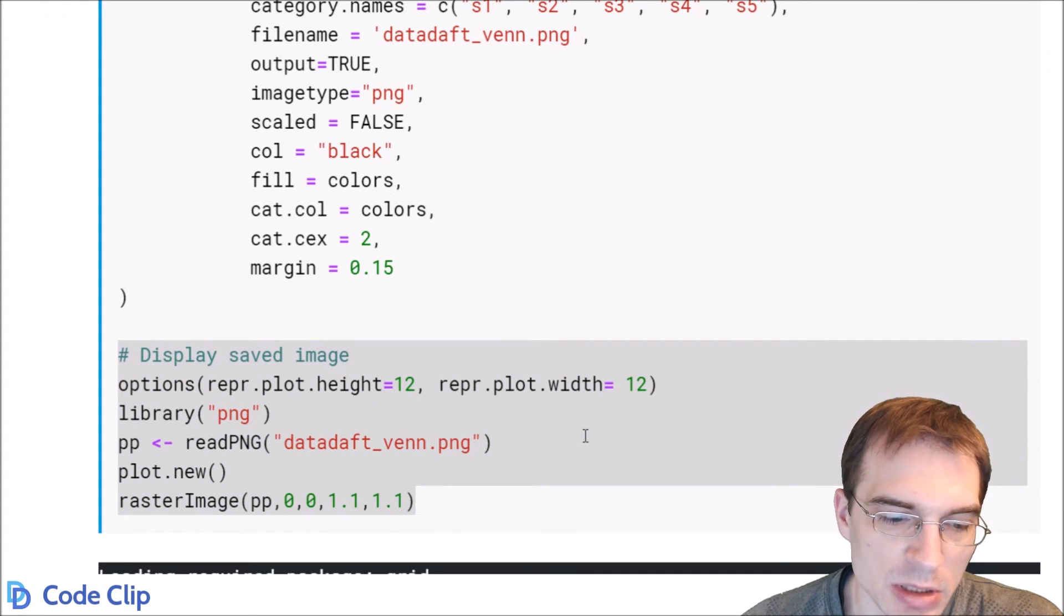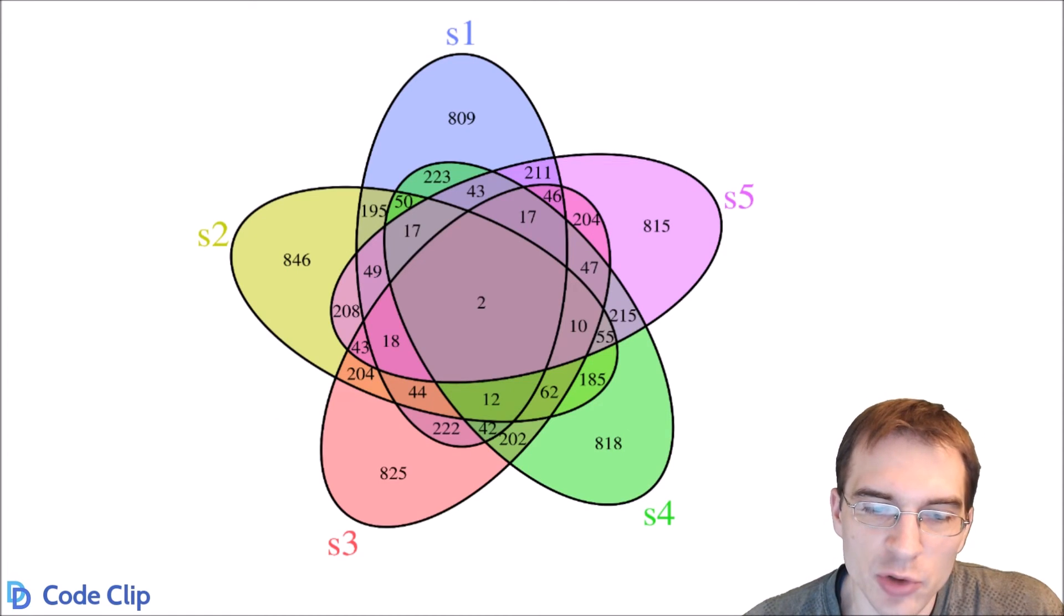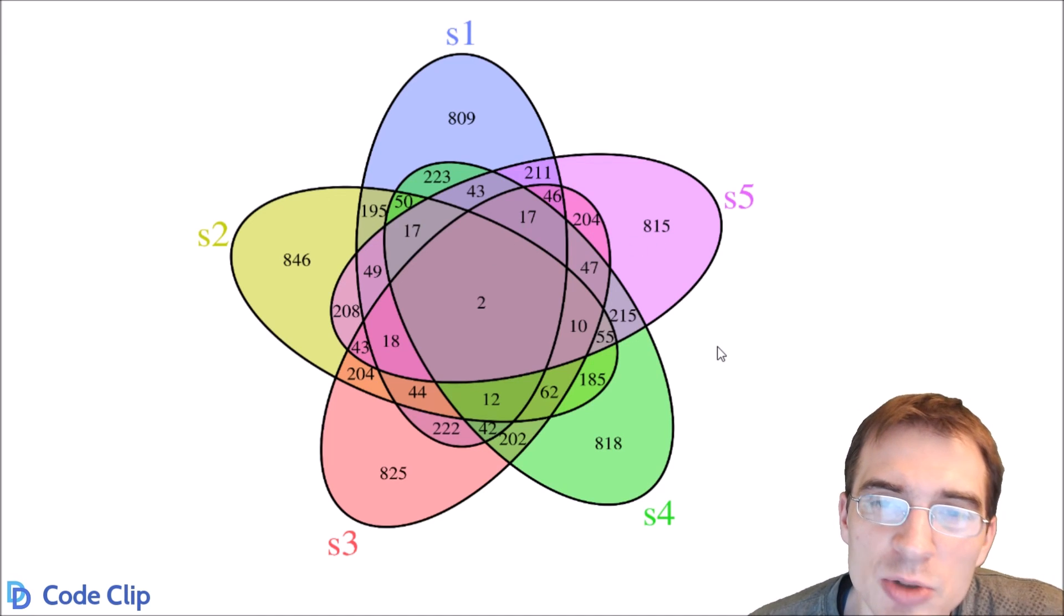So let's run this. It might take a little bit to load in all the packages, but as you can see, we've created this five-group Venn diagram with a lot of different overlapping segments, and you're probably not going to want to use a Venn diagram with five different groups because at that point it gets pretty hard to see all of the different intersections, but for two groups or three groups, it can be a nice way to show the overlap between different sets in a visually appealing way.